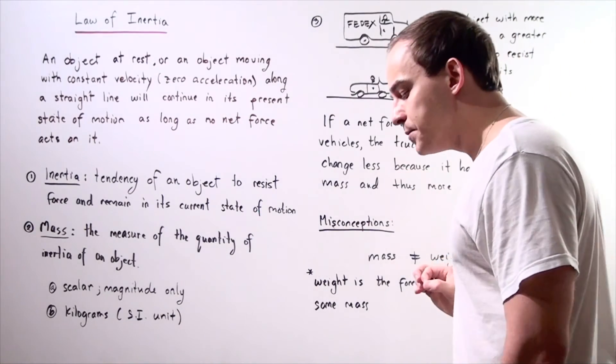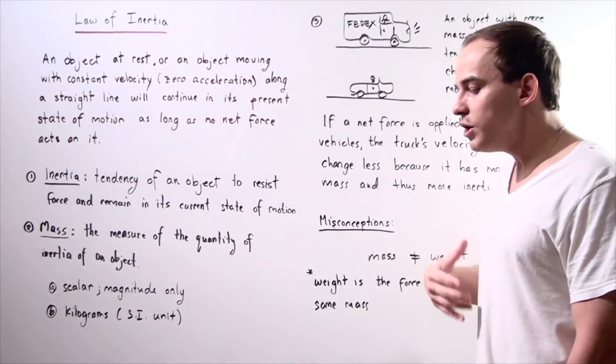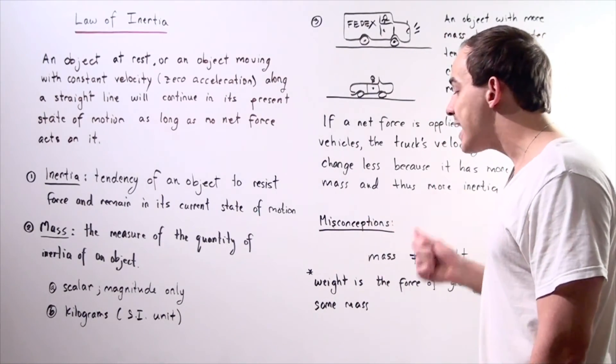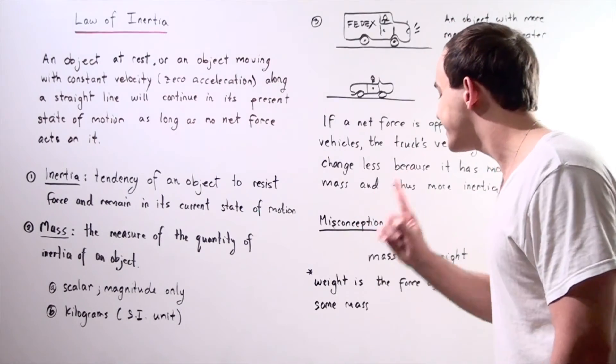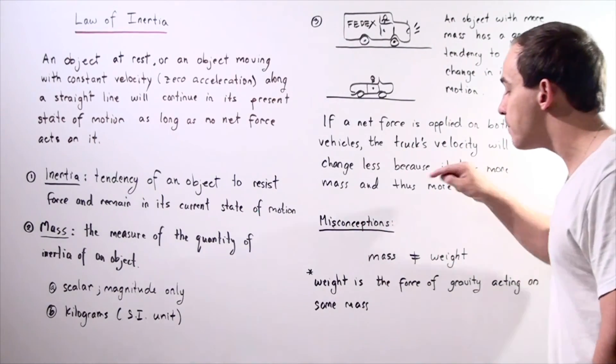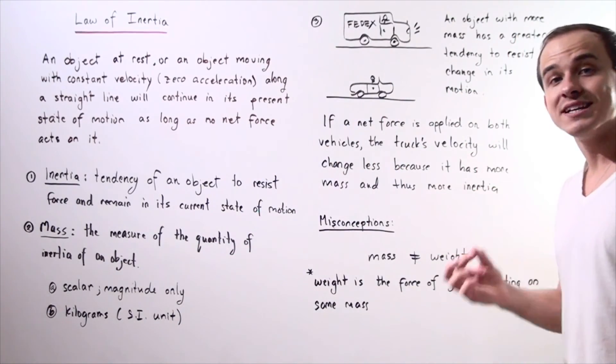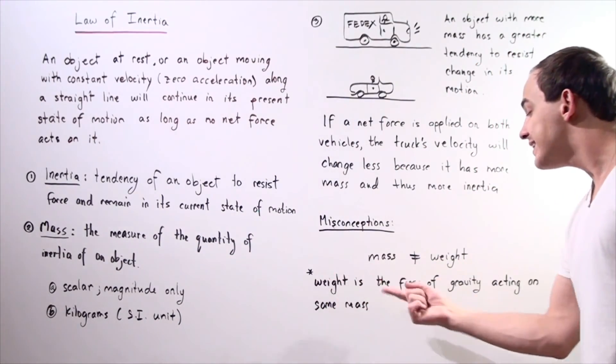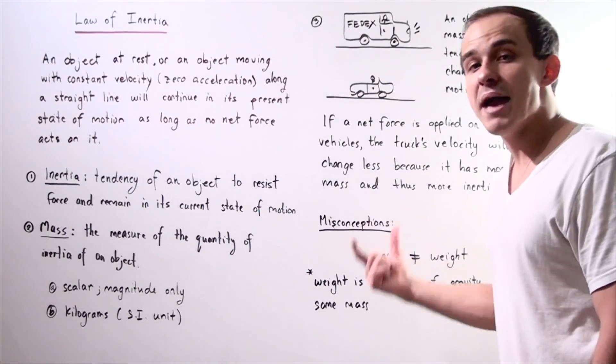Now, a common misconception about mass and weight. In everyday language, we normally use weight and mass interchangeably, but in physics, a clear distinction exists. Mass is not the same thing as weight. Mass is a scalar while weight is a force, a vector. Weight is the force of gravity acting on some mass.